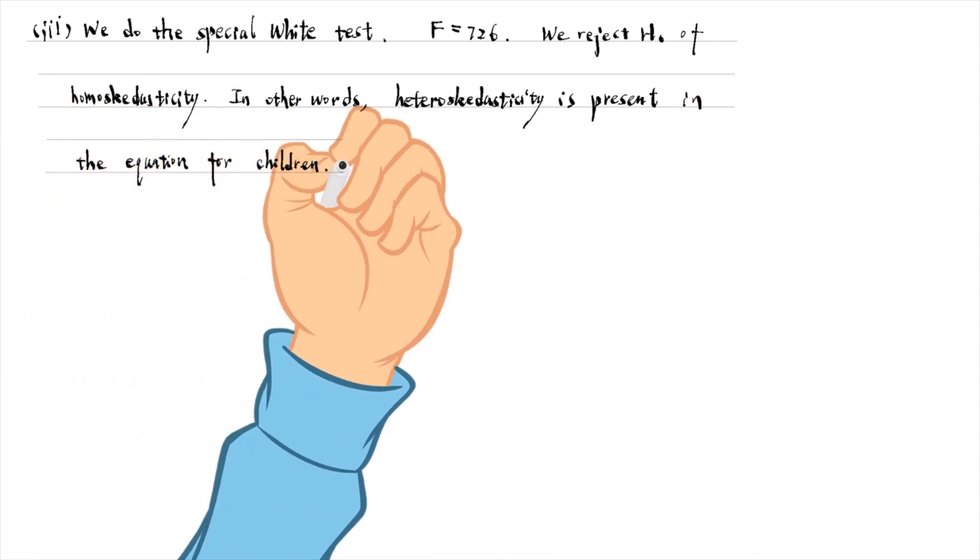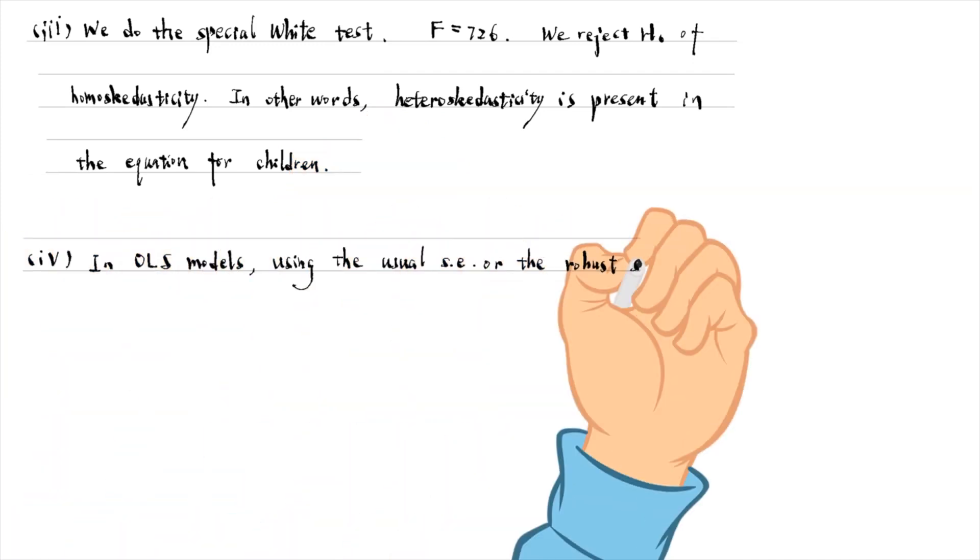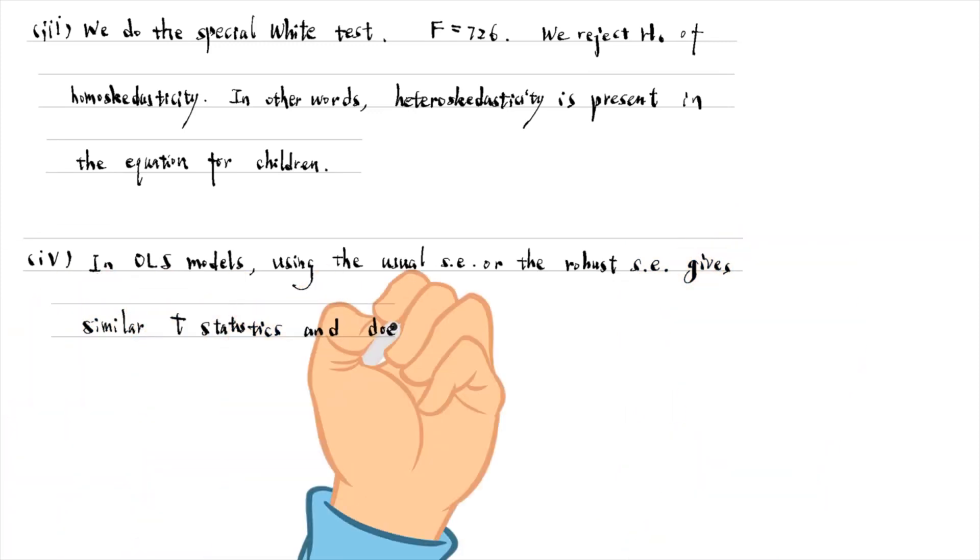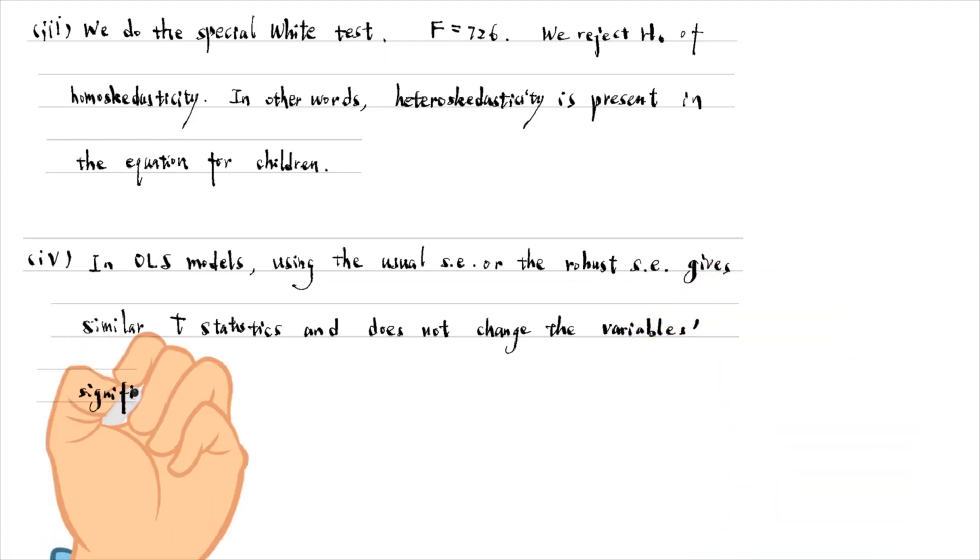For the last question, we have seen that in the OLS regressions, using the usual standard errors or the robust standard errors gives similar t-statistics and does not change the variable significance.